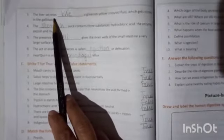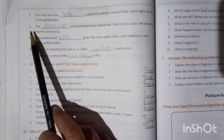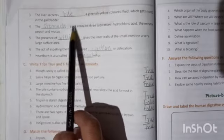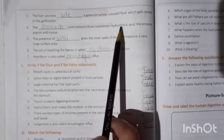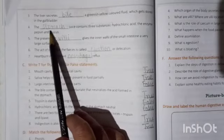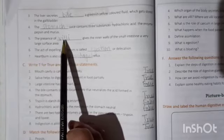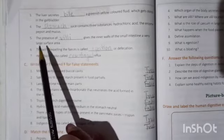Now turn this page. The liver secretes bile. The answer is bile. A greenish-yellow colored fluid which gets stored in the gallbladder. Now the fourth one, the answer is stomach. S-T-O-M-A-C-H. Stomach juice contains three substances, hydrochloric acid, the enzyme pepsin and mucus. The answer is stomach. Fifth one, the presence of villi. V-I-L-L-I. Villi. Gives the inner walls of the small intestine a very large surface area.